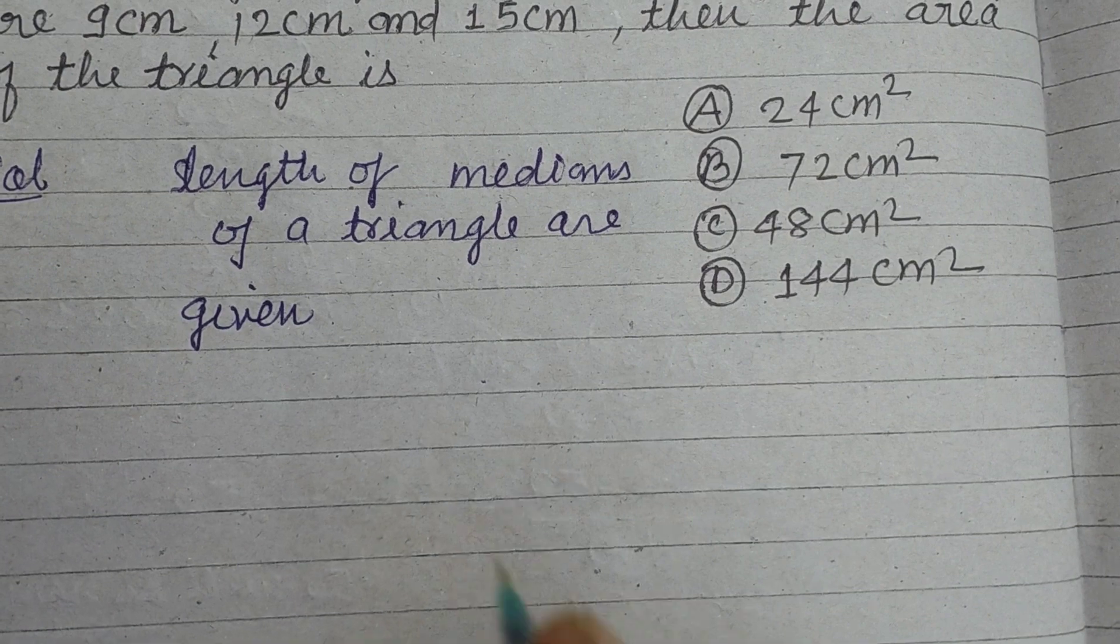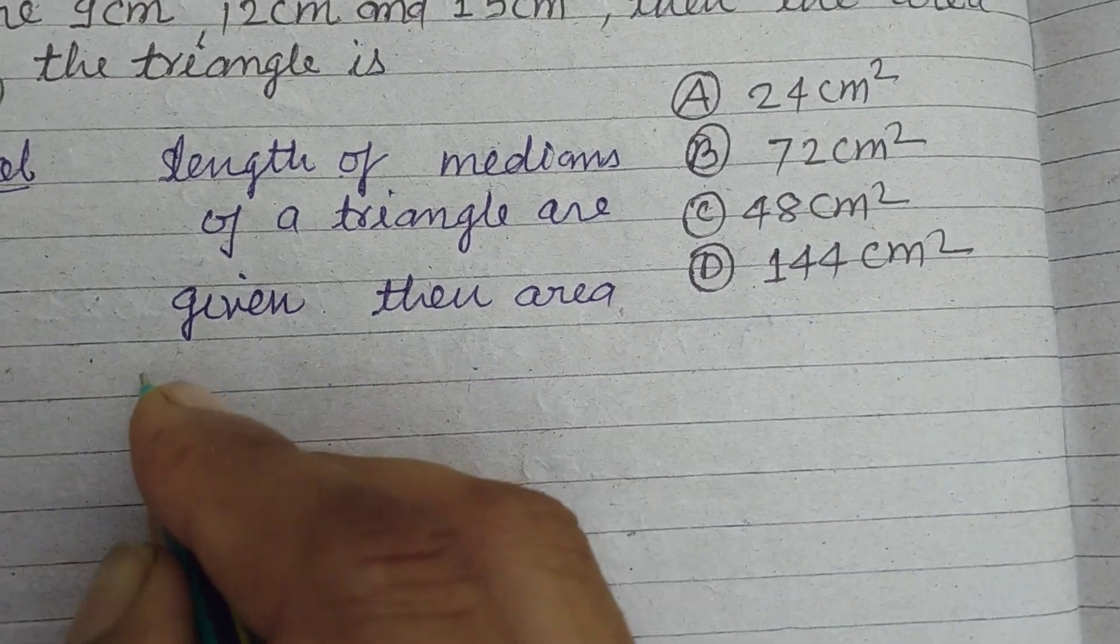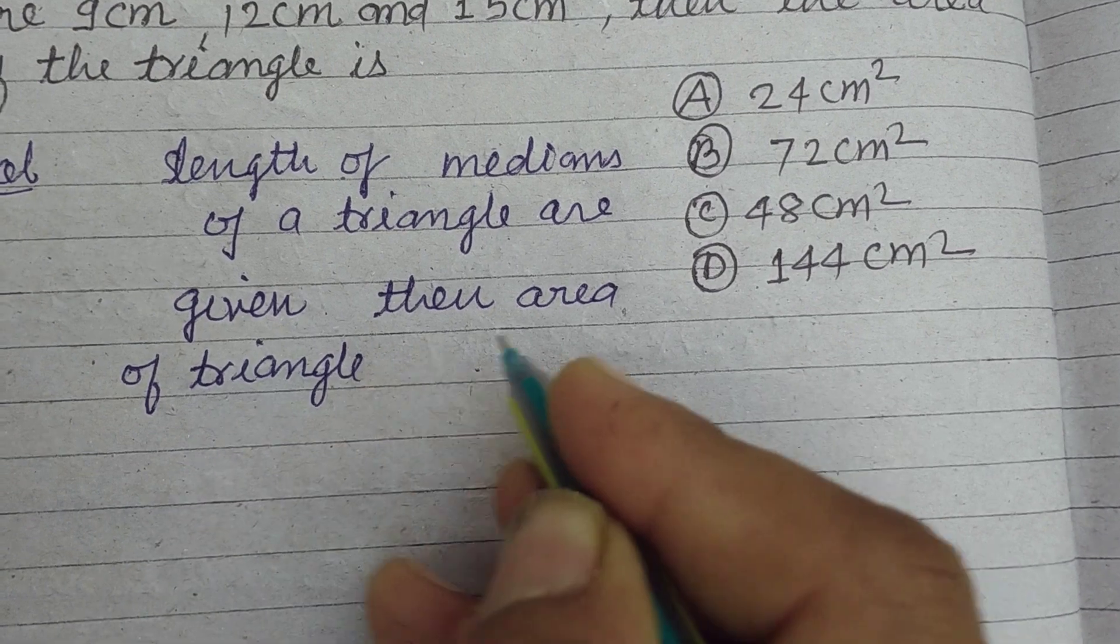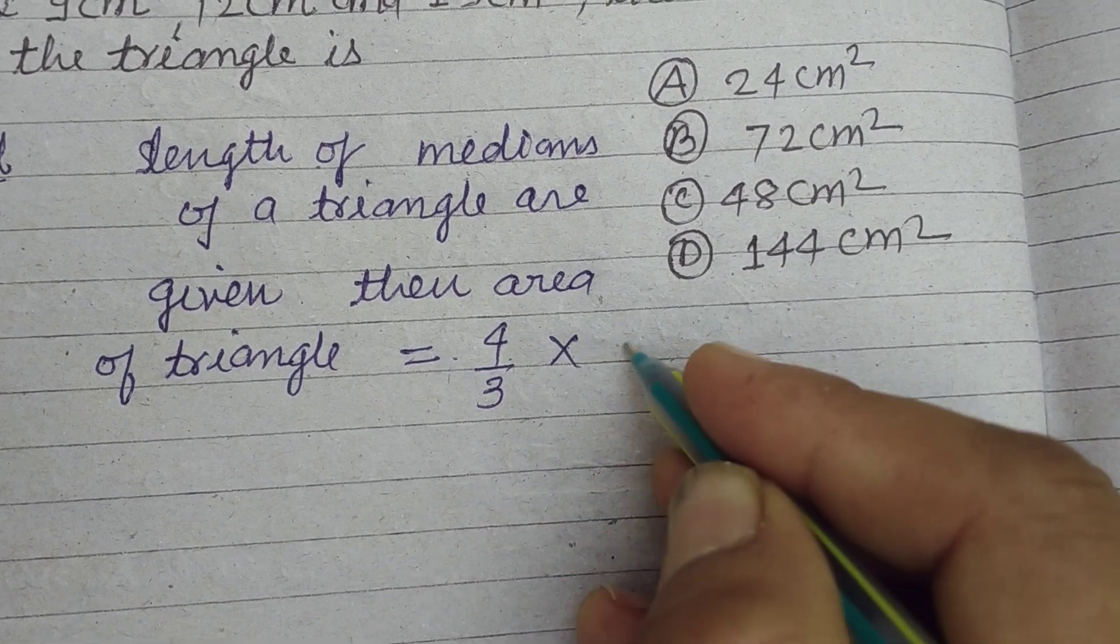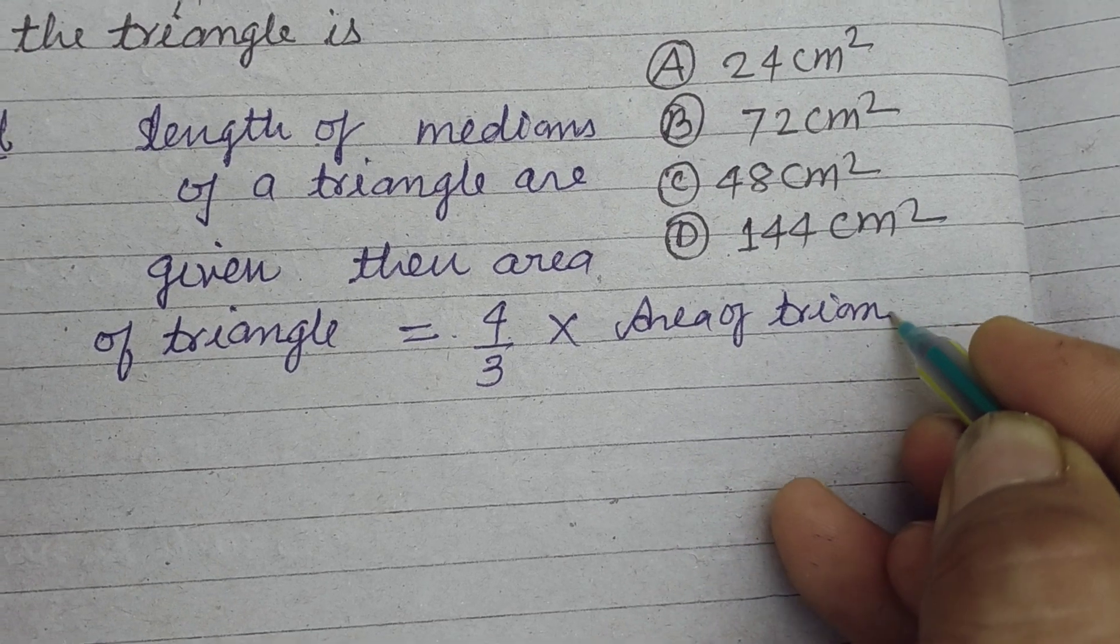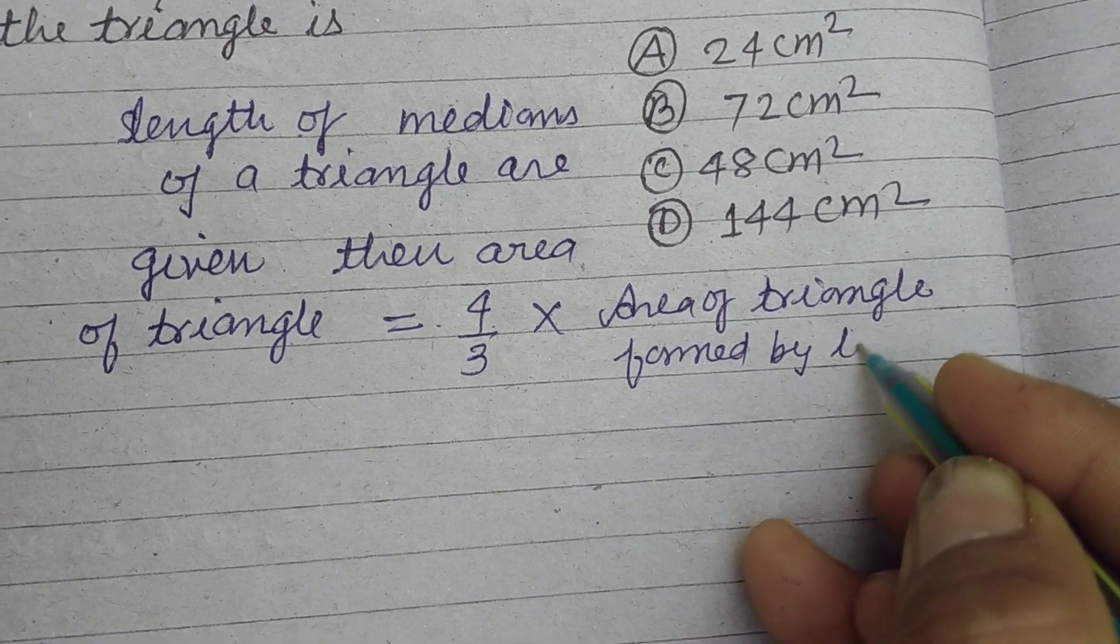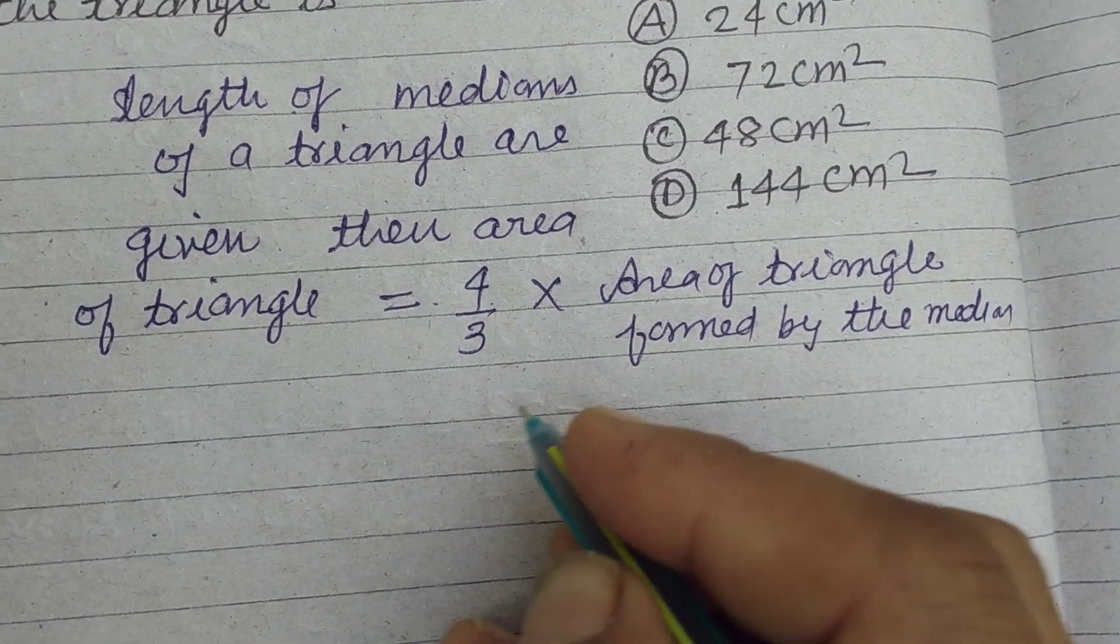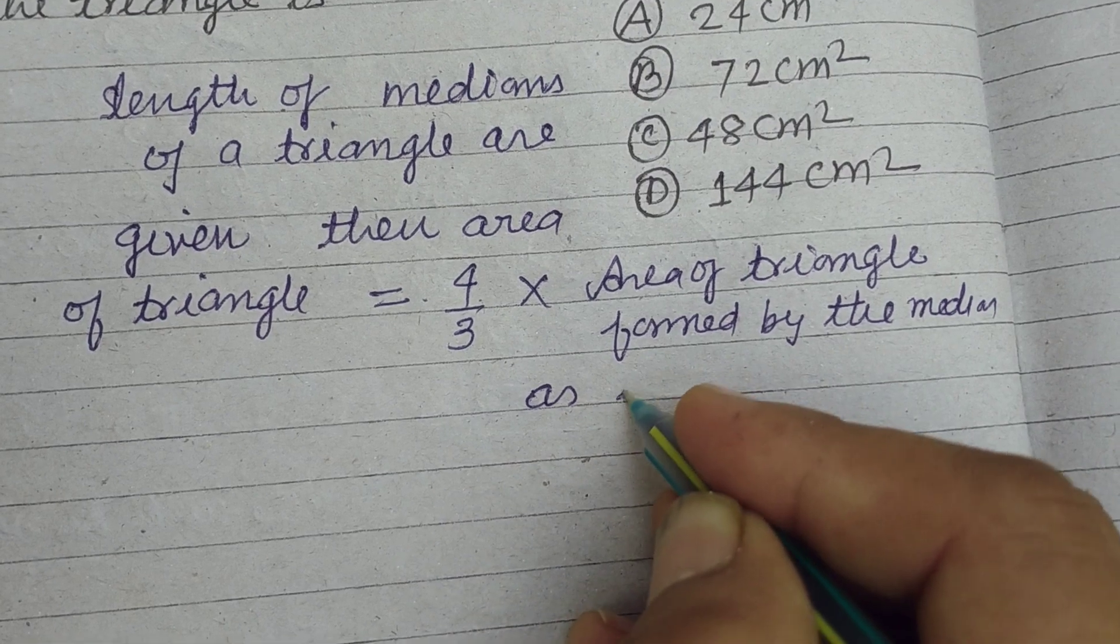but sides are not given, then area of triangle equal to 4 by 3 area of triangle formed by the median as sides.